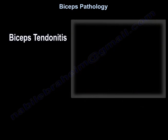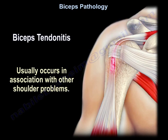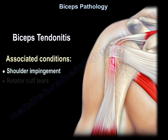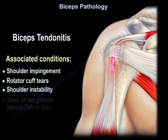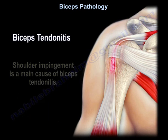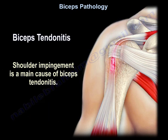Biceps tendonitis usually occurs in association with other shoulder problems such as shoulder impingement — that's very important — rotator cuff tears, shoulder instability, tears of the glenoid labrum, and shoulder joint arthritis. Shoulder impingement is the main cause of biceps tendonitis.